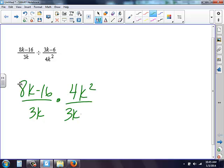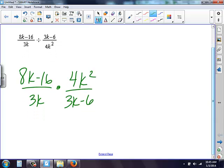Therefore, it turns into a multiplication problem, and I need to follow my multiplication steps. So when I do my multiplication, I need to simplify if I can. So I look at this 8k minus 16. I can pull out an 8. Therefore, I'm left with k minus 2.